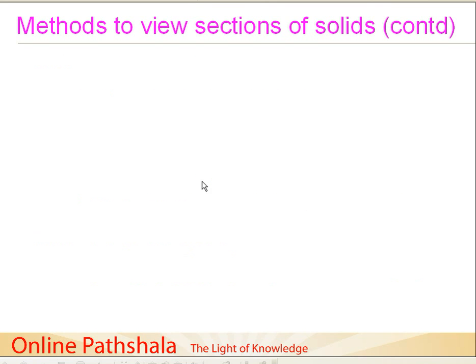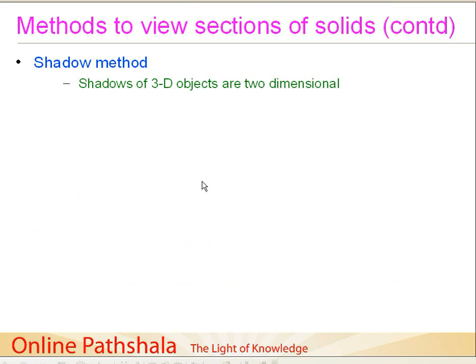Now let us go on to the second method, also called the shadow method. Have you ever seen your own shadow? Does your shadow have depth? No, it doesn't. Shadows of three-dimensional objects are two-dimensional. Our bodies are three-dimensional, but the shadows are two-dimensional. So we can use this method to view the section of a solid.